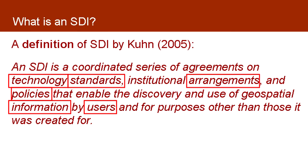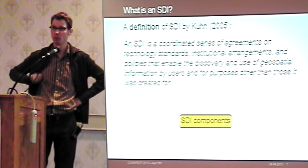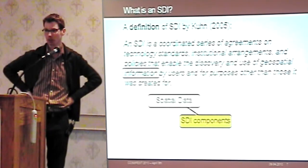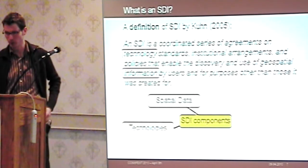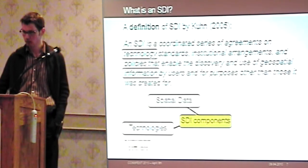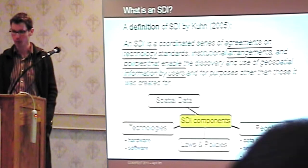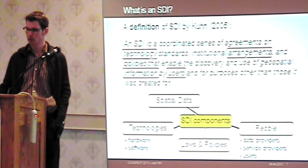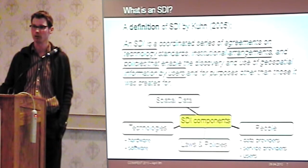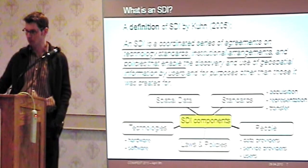A spatial data infrastructure is a coordinated series of agreements on technology standards, institutional arrangements, and policies that enable the discovery and use of geospatial information by users and for purposes other than those it was created for. The components are: spatial data or information, technologies including software and hardware, people including data providers, service providers, and users, and arrangements. Especially for international data infrastructures, these arrangements go into laws and policies — for instance, the INSPIRE directive at the European level. There are also standards for acquisition, representation, and transfer of data. It's not only a technical thing, it's also a social thing.